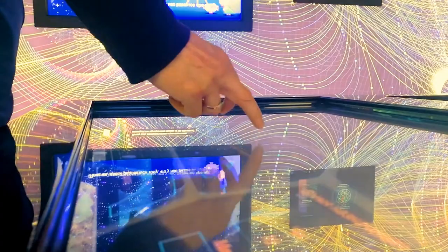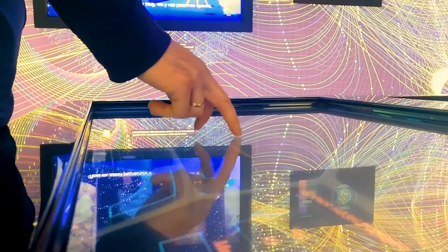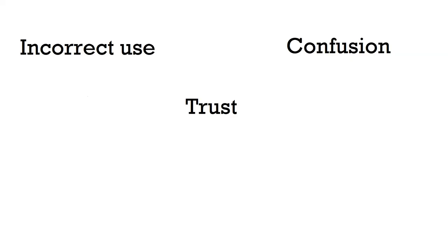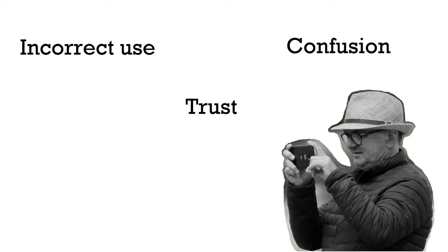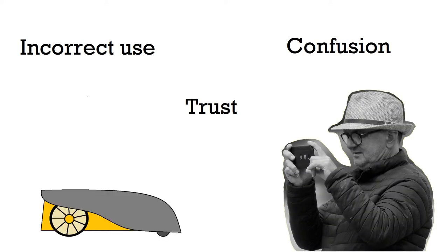In this video I will use the concepts of trust, confusion, and incorrect use to explain a problematic interaction between a man and his newly acquired automatic lawnmower.